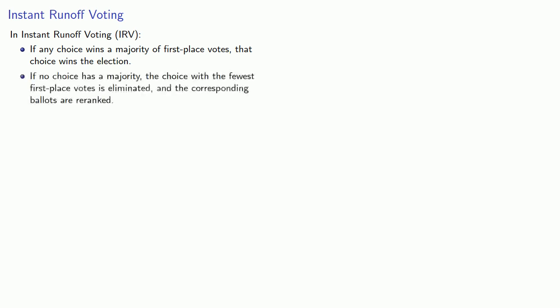Another common possibility is something called instant runoff voting. In instant runoff voting, if any choice wins a majority of first place votes, that choice wins the election. Of course, if there's three or more candidates, it's possible that nobody gets a majority. So, if no choice has a majority, the choice with the fewest first place votes is eliminated, and the corresponding ballots are re-ranked. And we'll repeat this process until done.